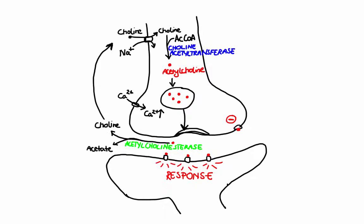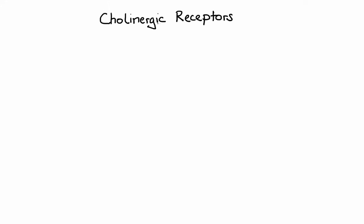Now let's talk about the receptors in more detail. There are two types of cholinergic receptors: muscarinic receptors and nicotinic receptors. As you can probably tell from their names, muscarinic receptors have high affinity for muscarine and nicotinic receptors have high affinity for nicotine.